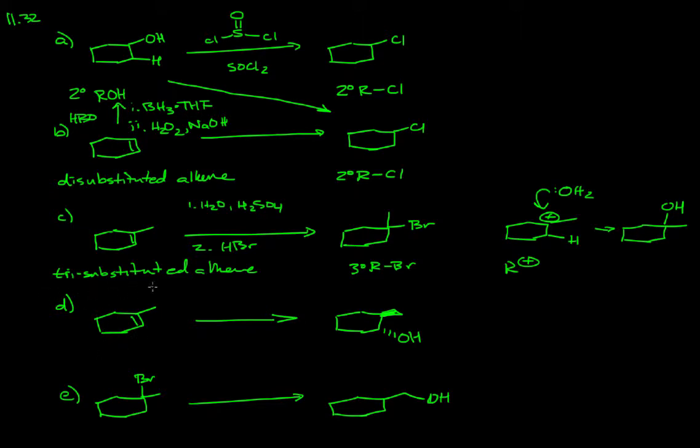Part D, we're taking the same trisubstituted alkene. However, this time we're going to a secondary alcohol. If you look at what we've done overall, we've added the elements of water across that alkene. As opposed to treatment under acidic conditions as we did in part C, we want the alcohol portion to go to the secondary or least substituted carbon.